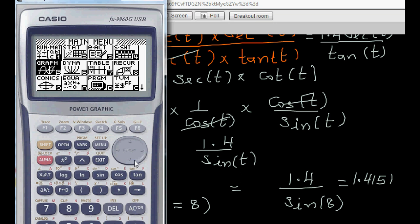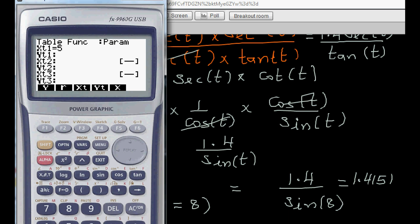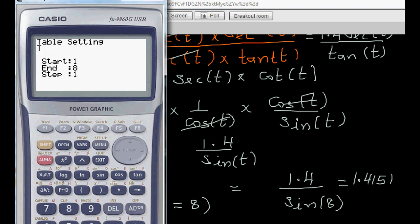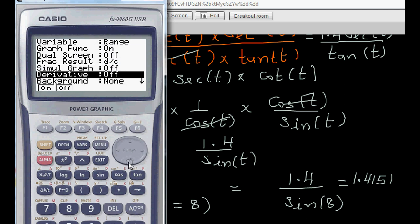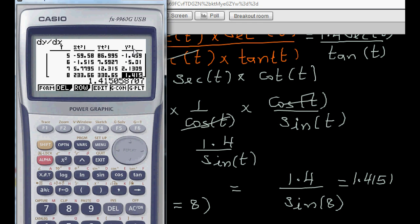You can also verify this on a graphic calculator. Go to the parametric table and enter x as 5 divided by cos t (which is 5 sec t) and y as 7 tan t. Set the range from 1 to 8, turn the derivative on, then go to the table. Scroll down to t = 8 and scroll right — y'1, which is dy/dx, reads 1.4151.